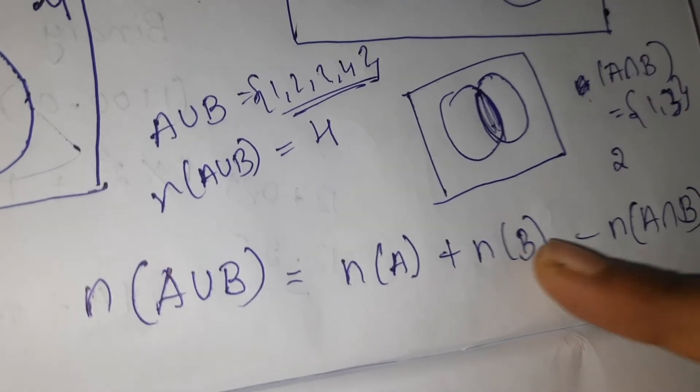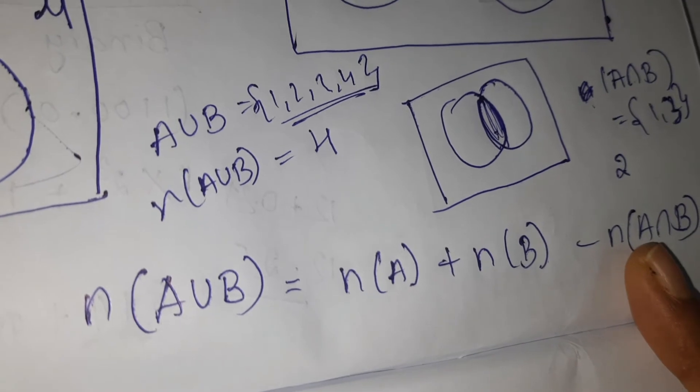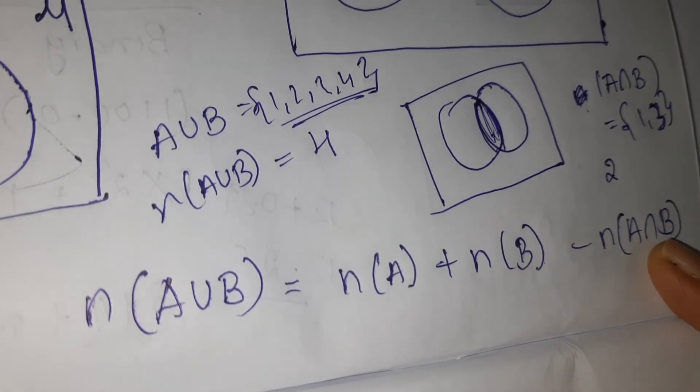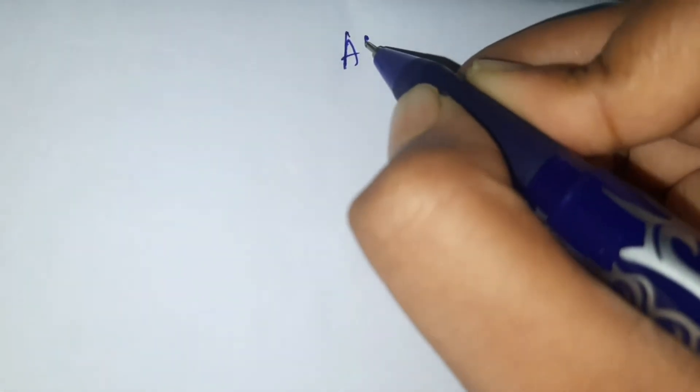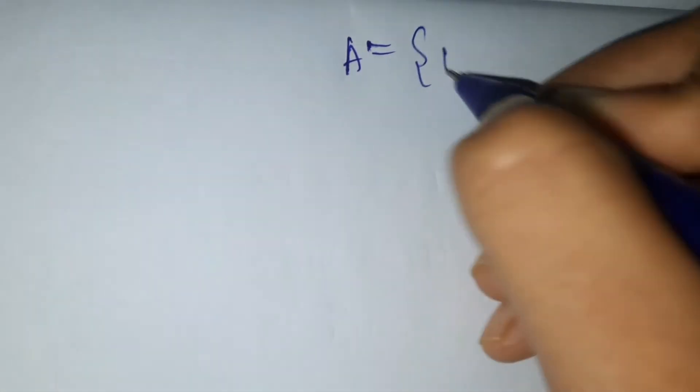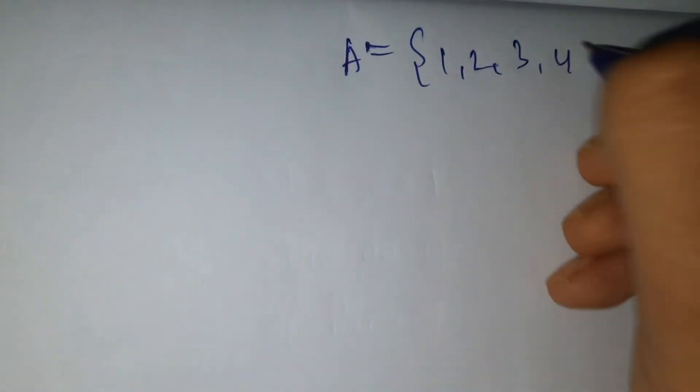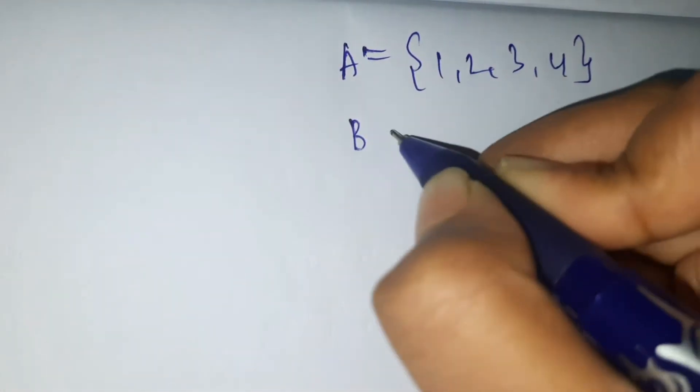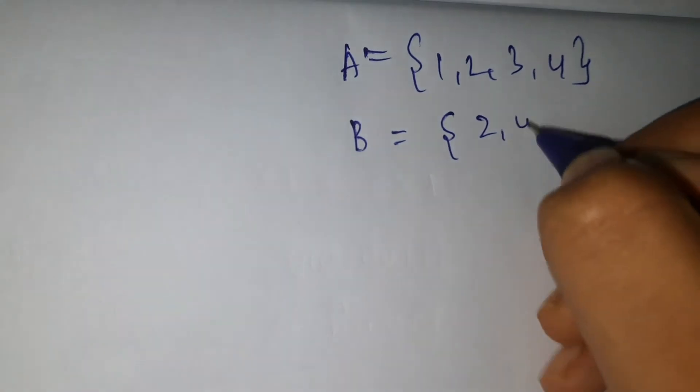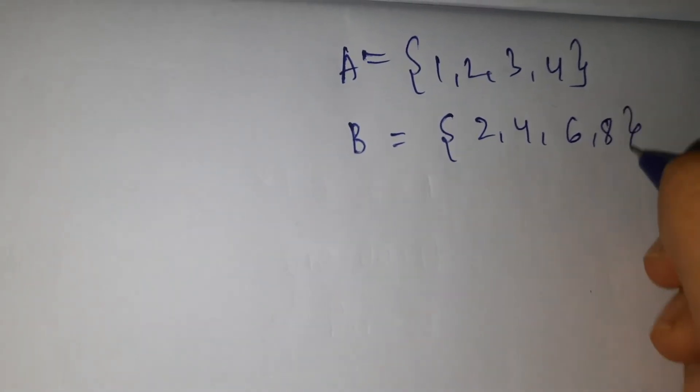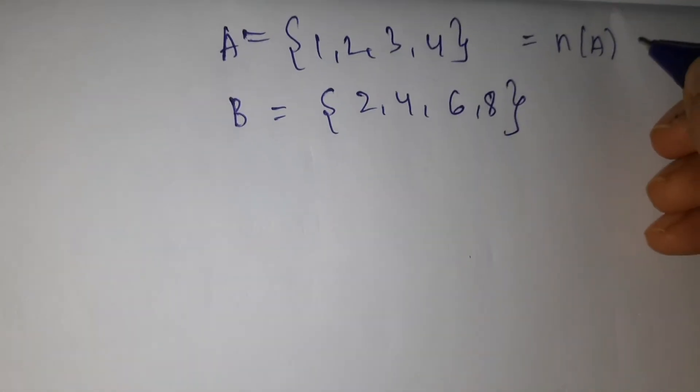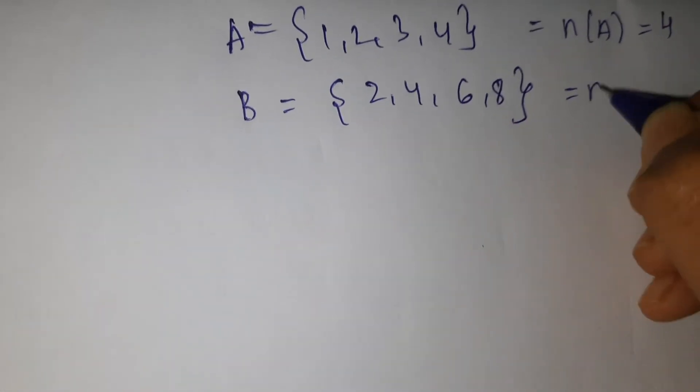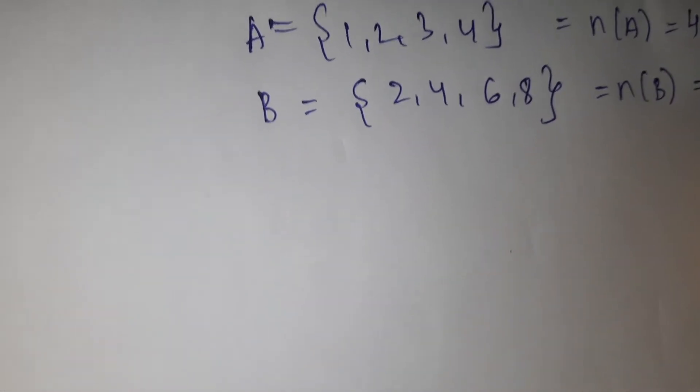If A is {1, 2, 3, 4} and B is {2, 4, 6, 8}, then n(A) is how much? Four. n(B) is how much? Four.